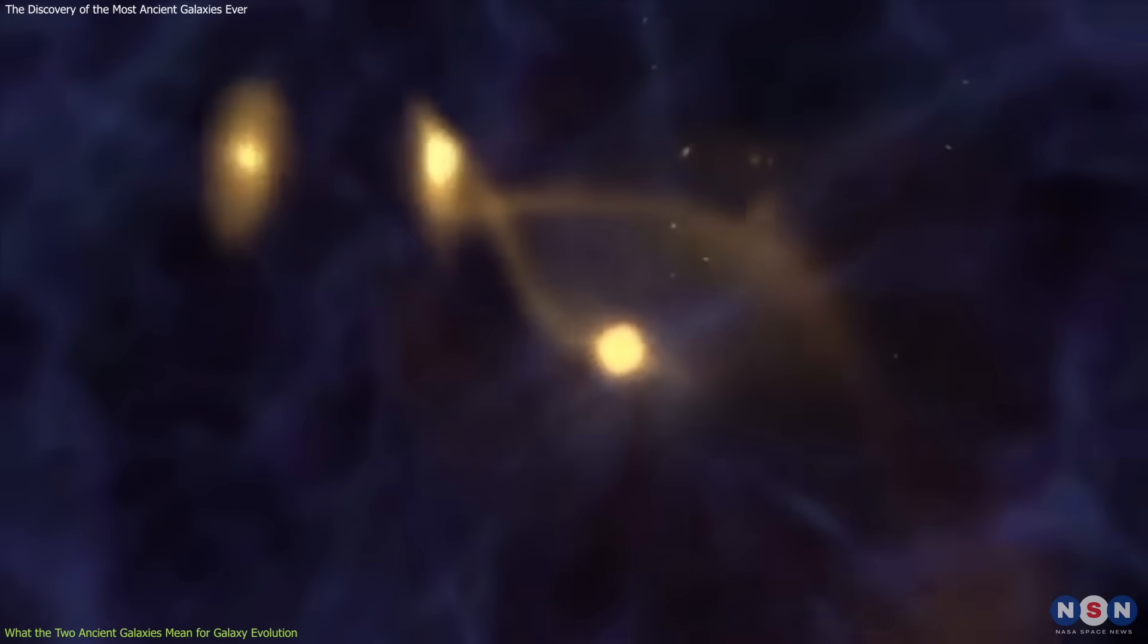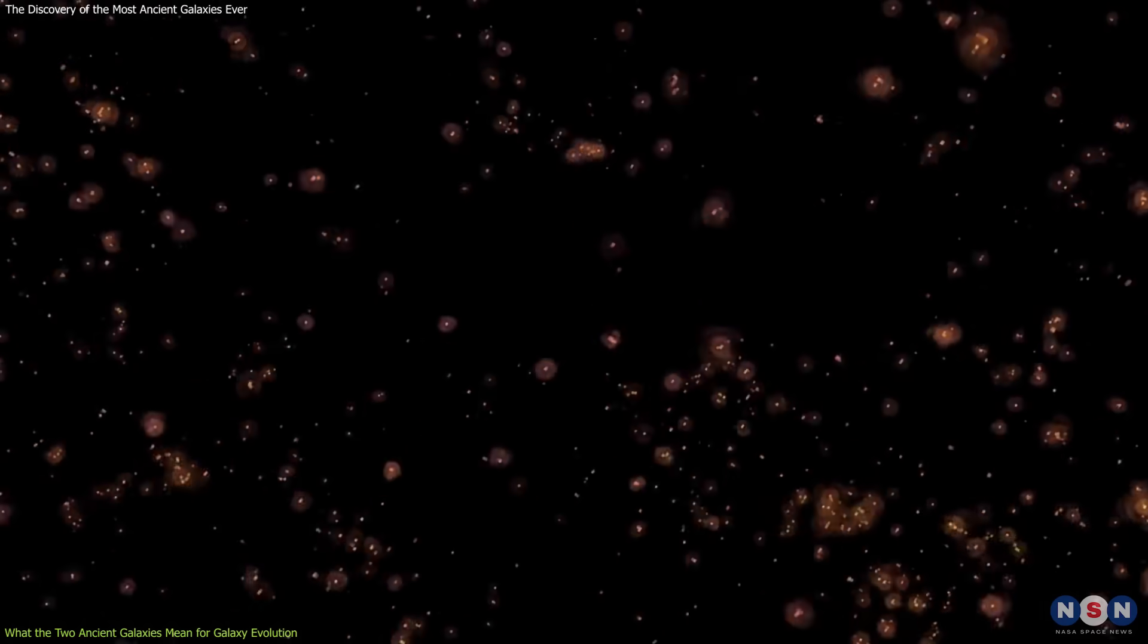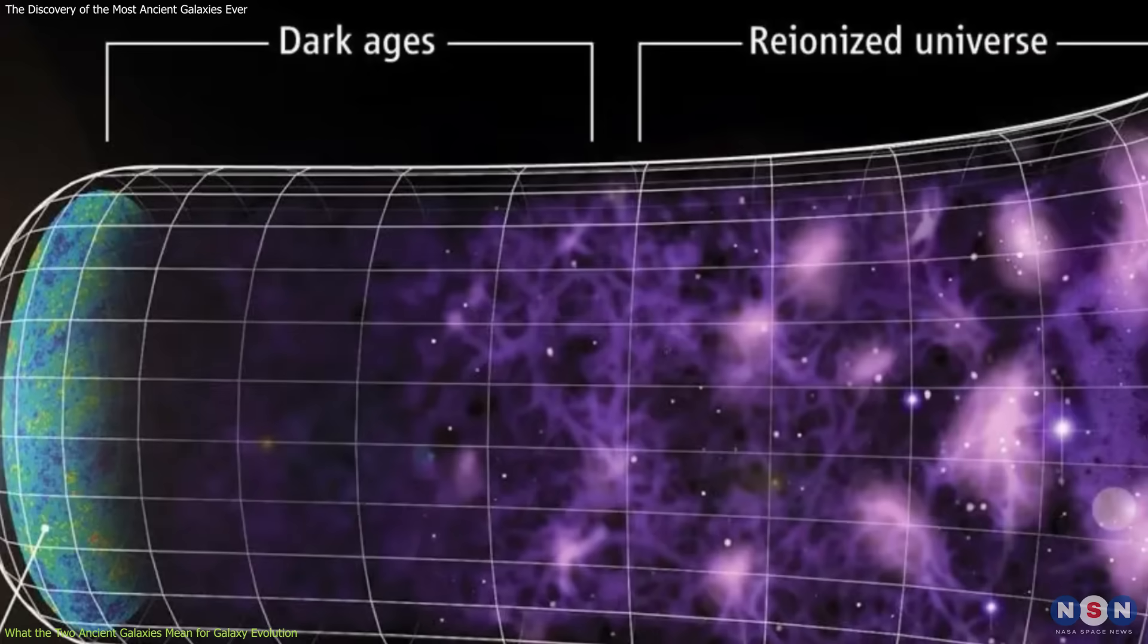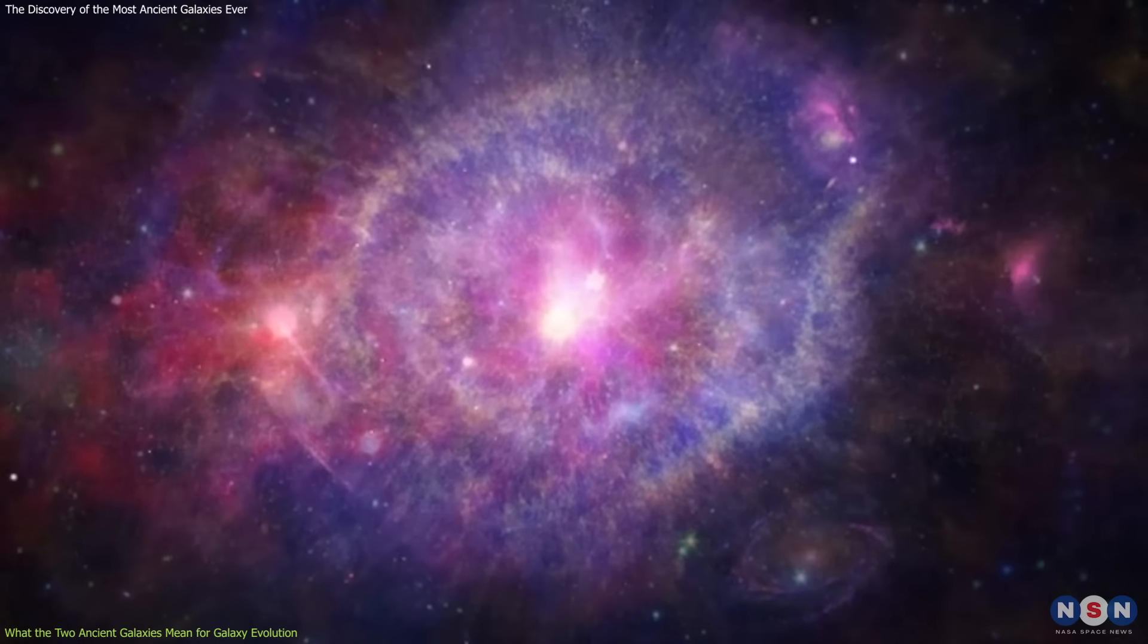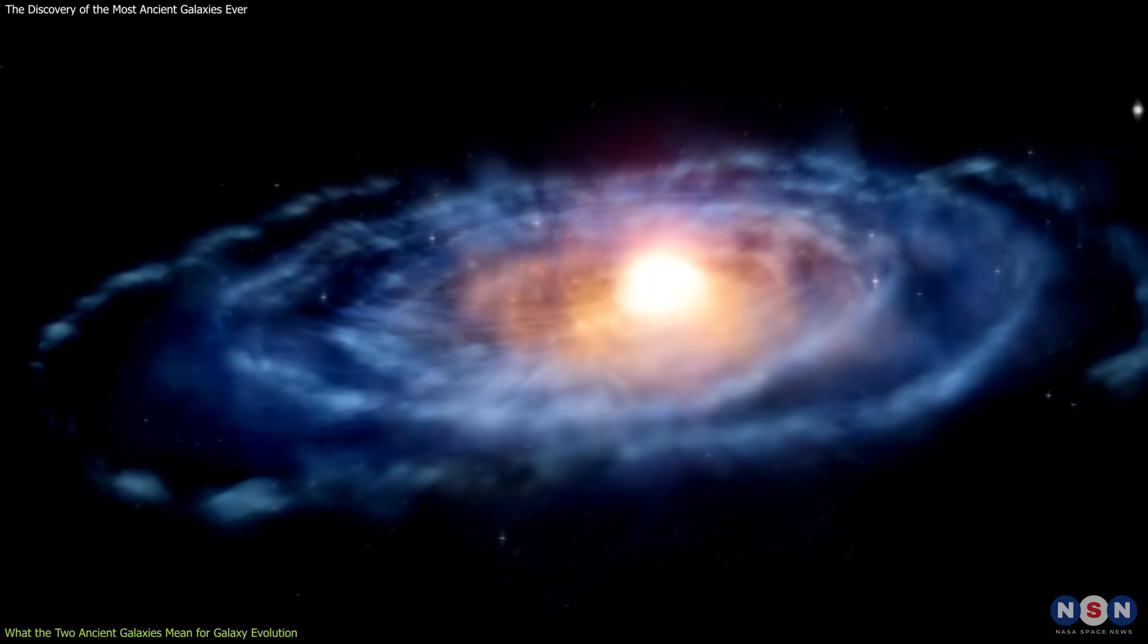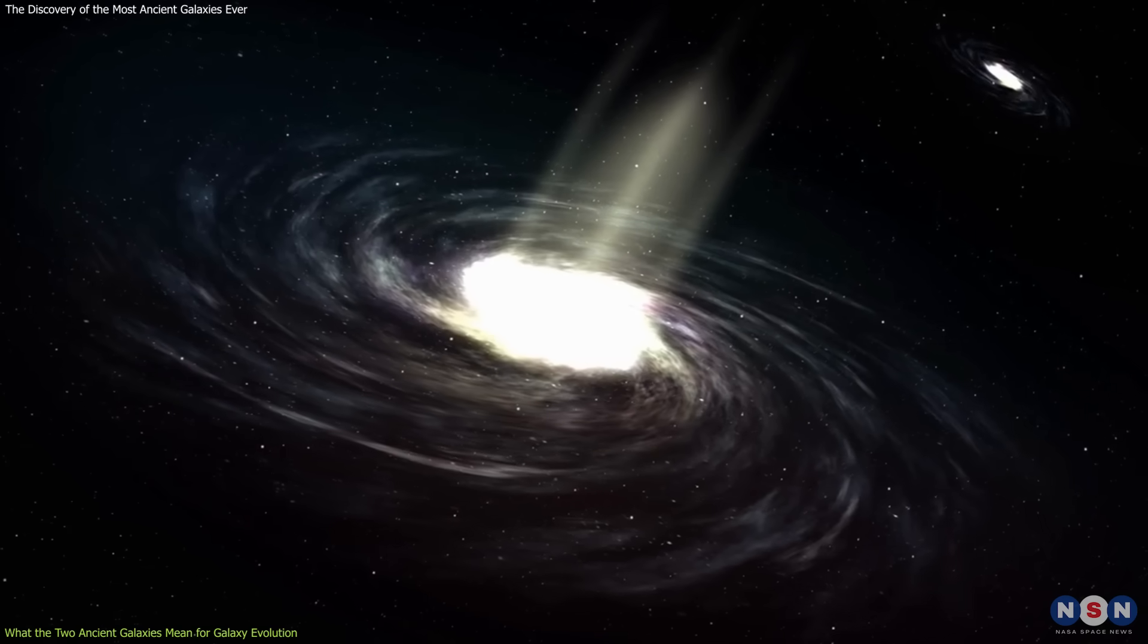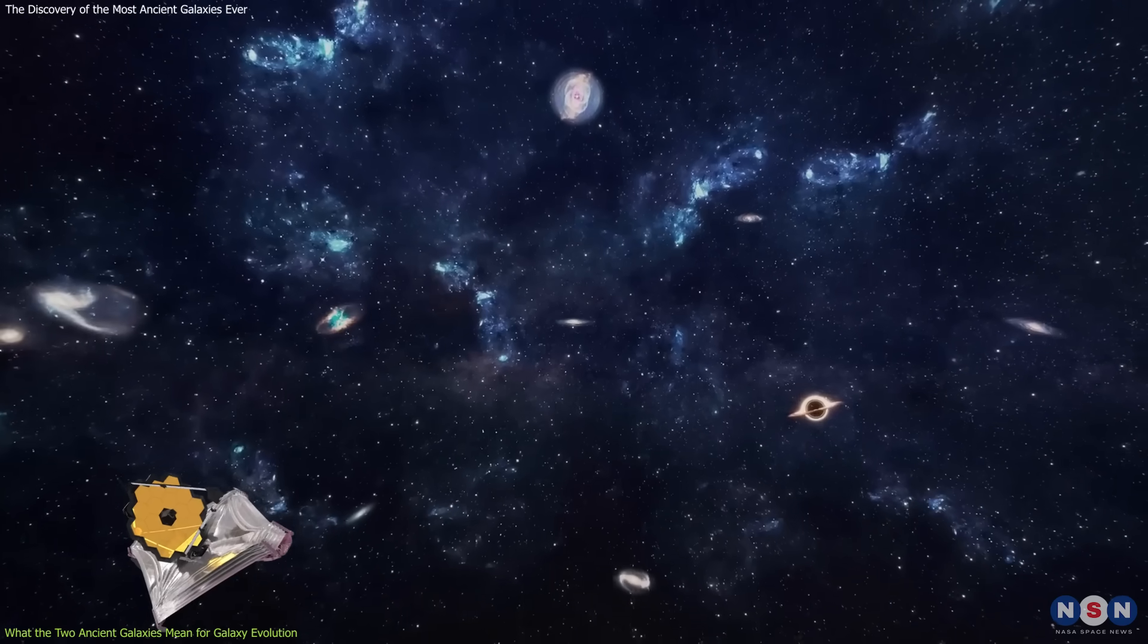One of the challenges is how the first galaxies influenced and changed the environment around them, especially through the emission of ultraviolet radiation and the production of metals. The emission of ultraviolet radiation is thought to have ionized the neutral hydrogen that surrounded the galaxies, creating bubbles of ionized gas that eventually merged and re-ionized the whole universe, ending the cosmic dark ages. The production of metals is thought to have enriched the intergalactic medium with heavier elements that were essential for the formation of later generations of stars and planets. Discovering Uncover Z12 suggests that some of the first galaxies were very bright, hot, and metal-rich, contributing significantly to the re-ionization and enrichment of the universe. And discovering Uncover Z13 suggests that some of the first galaxies were very faint, cold, and metal-poor, surviving the re-ionization and enrichment of the universe.